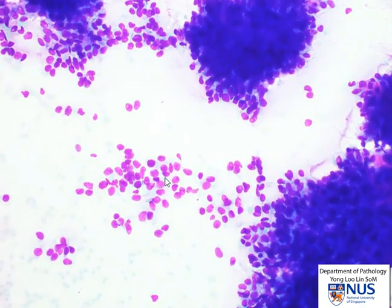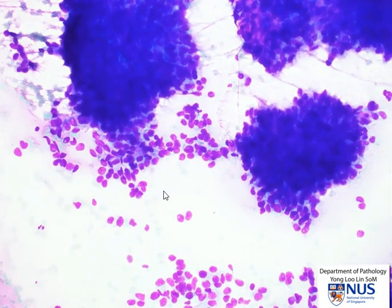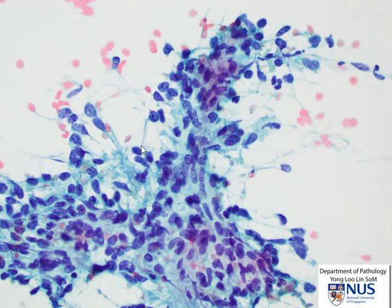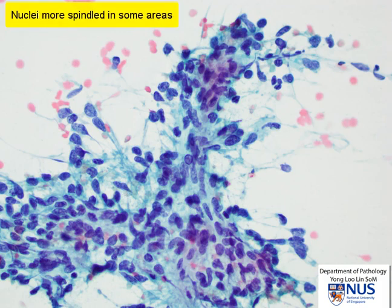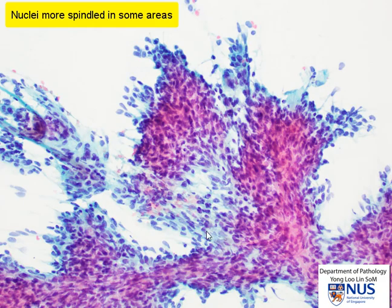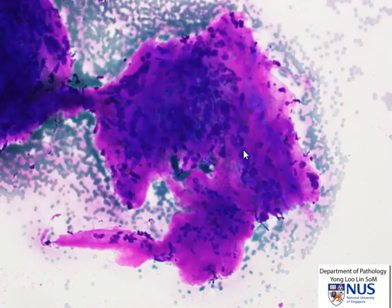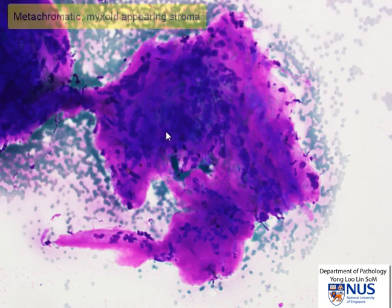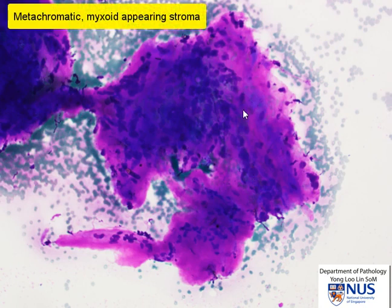Here we see a group of cells with quite round nuclei, very delicate cytoplasm, and some of them are seen as naked nuclei or bare nuclei. Just to show a few more pictures — there are different areas where the cells appear to be a little bit more spindled, where the nuclei are more elongated. Here is another such area where we can see nuclei that are round, but at the same time more elongated nuclei. On the air-dried smears, there appears to be some stromal material within which these more elongated or spindled nuclei are embedded.